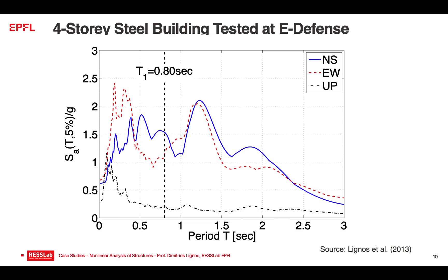The structure was subjected to a three-dimensional ground motion shaking of the JR Takatori record. The period of the building was around 0.8 seconds. The north-south component is shown in blue, the east-west component in dashed red, and the vertical component in black. When the building starts experiencing damage, the period will shift and move into a region that was also very damaging during the actual 1995 Kobe earthquake.